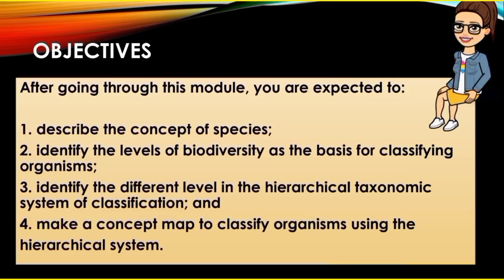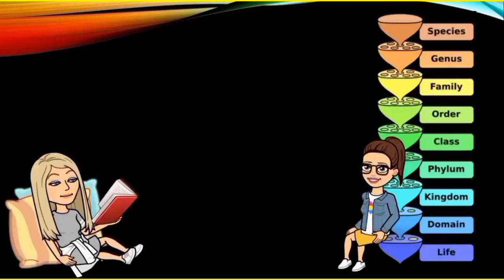So the objectives are as follows. First, describe the concept of species. Second, identify the levels of biodiversity as the basis for classifying organisms. Third, identify the different levels in the hierarchical taxonomic system of classification and make a concept map to classify organisms using the hierarchical system.